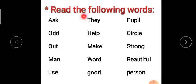Now read the following words. You have to read these words with spelling. A-S-K, Ask. O-D-D, Odd. O-U-T, Out. M-A-N, Man. U-S-E, Use. Ask, Odd, Out, Man, Use. T-H-E-Y, They. H-E-L-P, Help. M-A-K-E, Make. W-O-R-D, Word. G-O-O-D, Good.